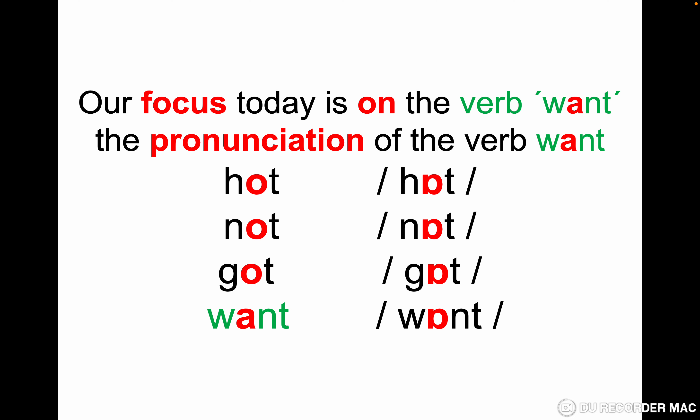This lesson is on the verb 'want' and its pronunciation. The words 'hot', 'not', and 'got' all have the letter O pronounced as 'o'. But with the verb 'want', we have the letter A — and it is pronounced 'wont'. Many students pronounce it 'want', but it's not 'want', it's 'wont'.